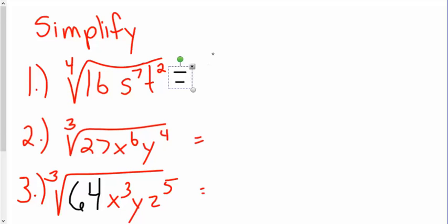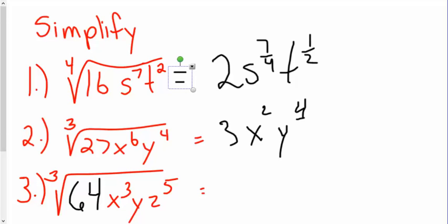Now, we should have gotten 2S to the 7/4, T to the 1/2, 3x squared, y to the 4/3, and lastly, 4x, y to the 1/3, z to the 5/3. If you didn't get those, then stick around. If not, you're done with the video and thank you for watching. So, let's go over the first one.